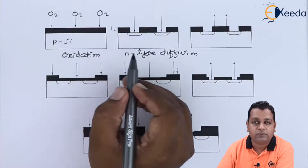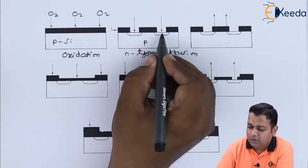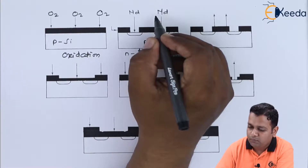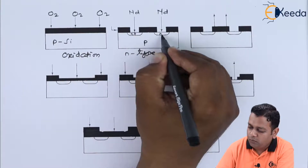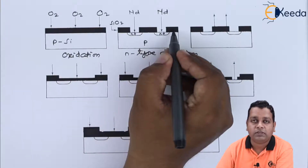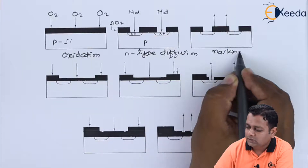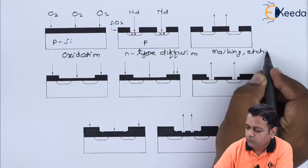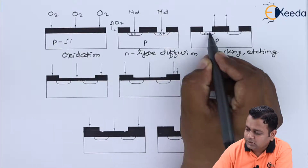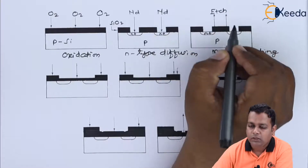The next step is N-type diffusion into the substrate. As the substrate is P-type silicon, we carry the same substrate forward and at two places, through oxide layers, we add N-d representing donor impurities, making them N-positive levels. The SiO2 oxide is represented by dark shades. In the third step, we perform masking and etching, continuing with the P-type material and N-positive regions.